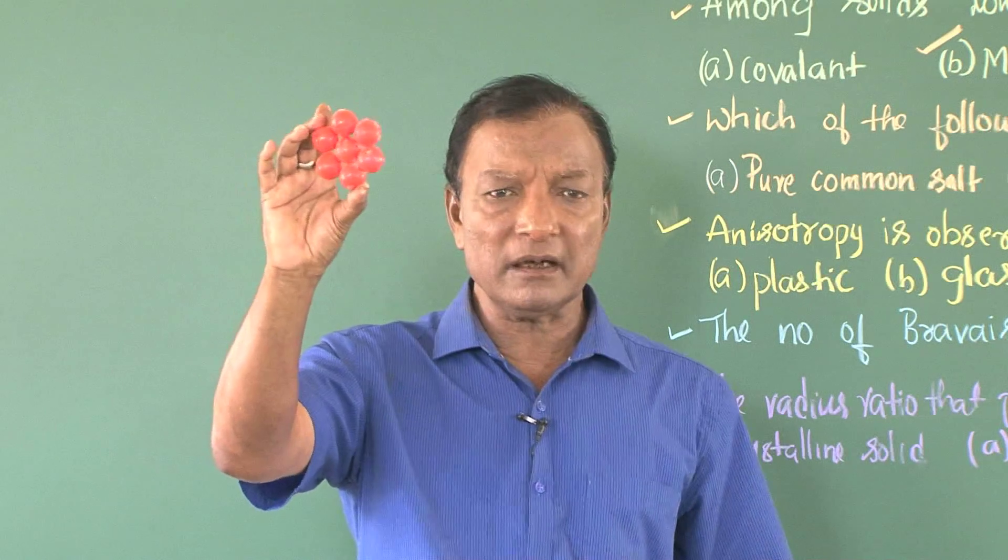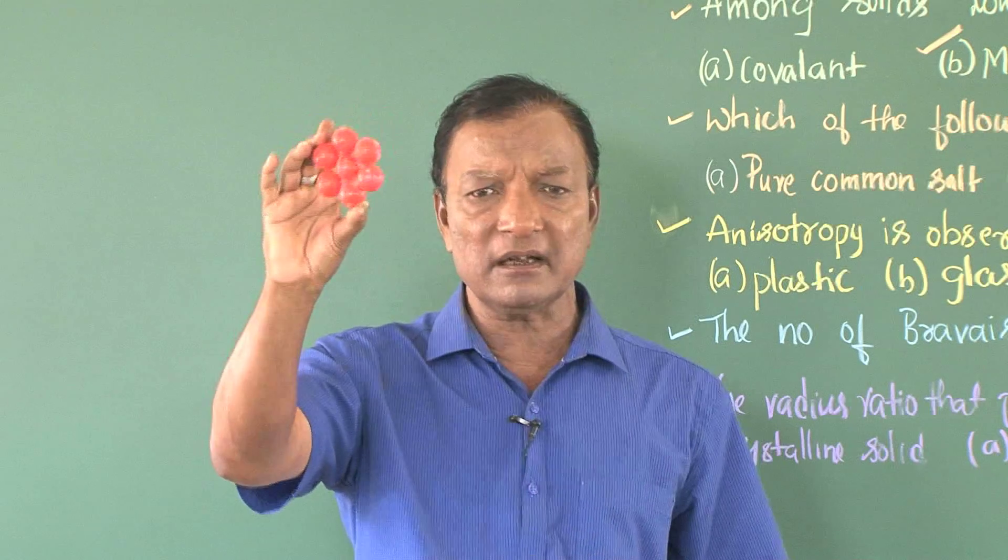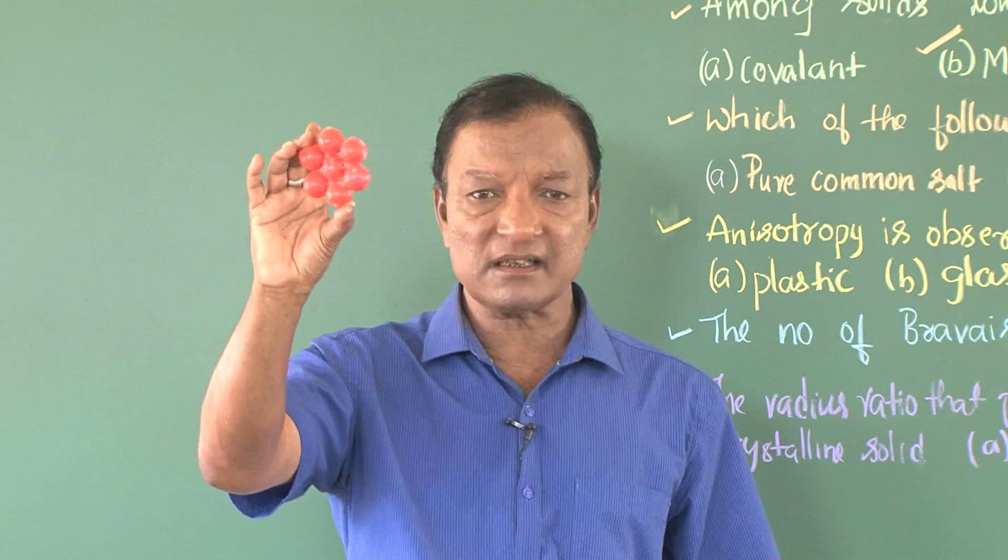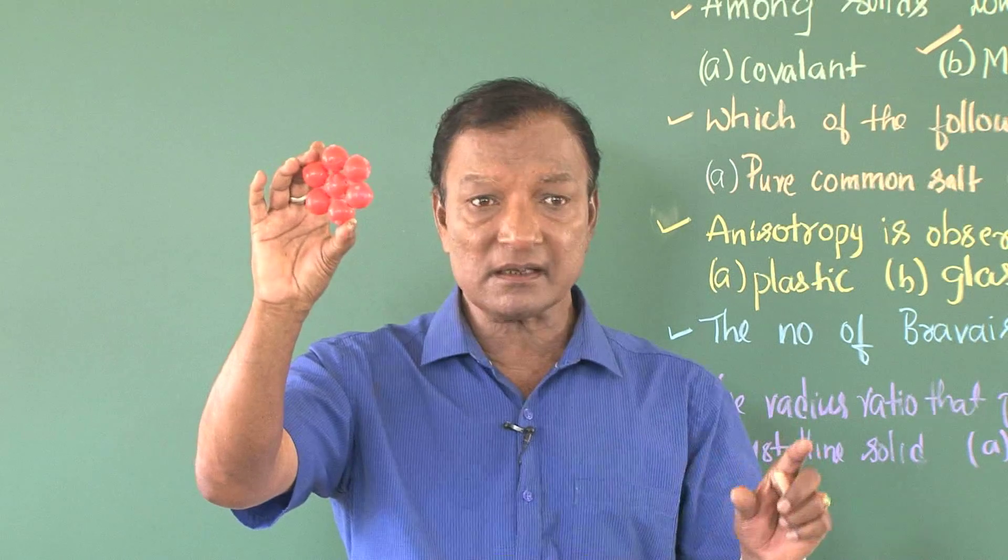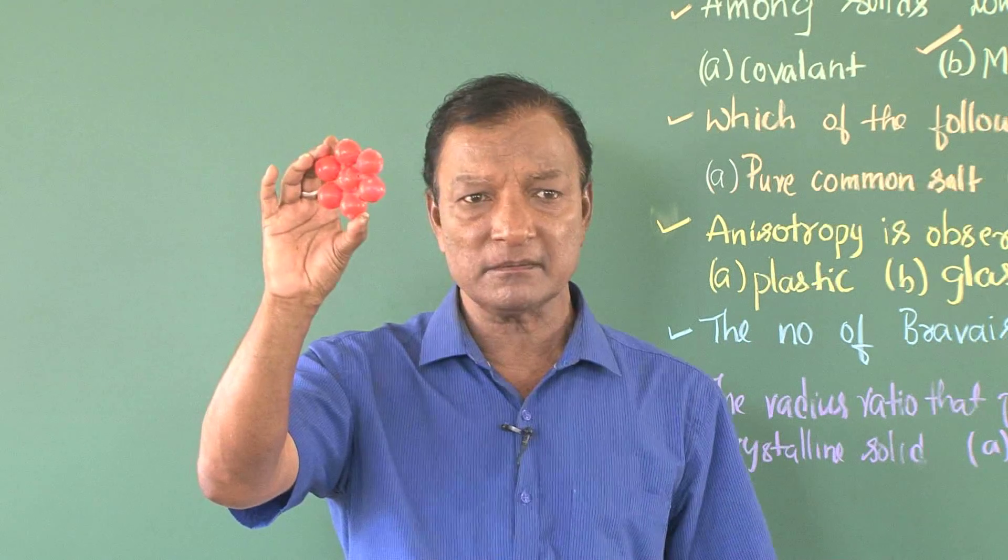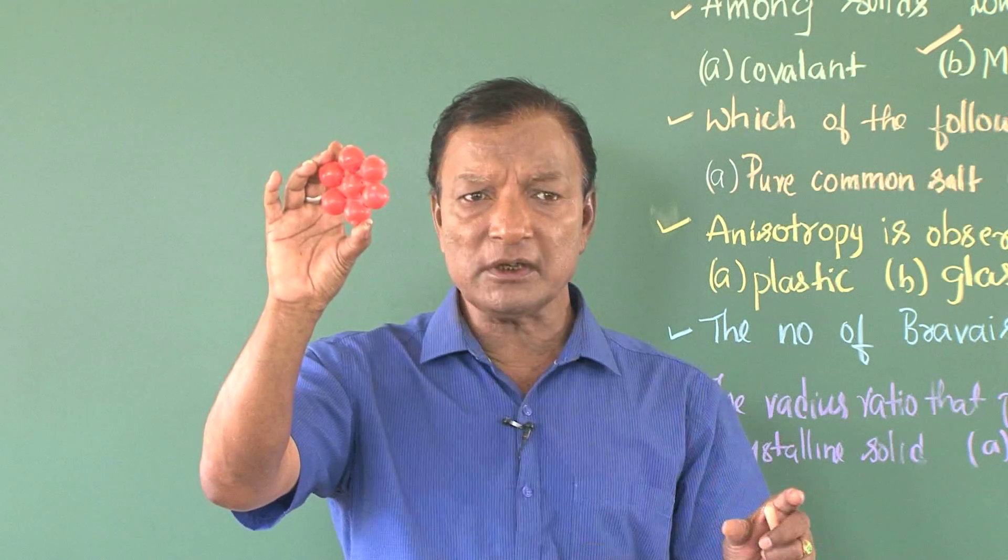And there we are. One particular particle at the center is having the nearest neighbors six in number. And this six becomes the coordination number.